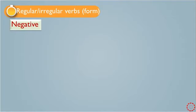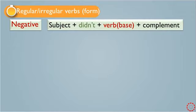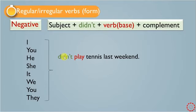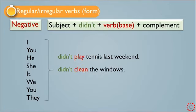To negate past simple, we add didn't. The structure is: subject + didn't + base form of the verb + complement. Be careful — because we have didn't, we use the base form, not the past form of the verb. For example: 'I didn't play tennis last weekend,' 'He didn't play tennis last weekend' — we say 'play,' not 'played.' Another example: 'She didn't clean the window' — we say 'clean,' not 'cleaned,' because we have didn't.